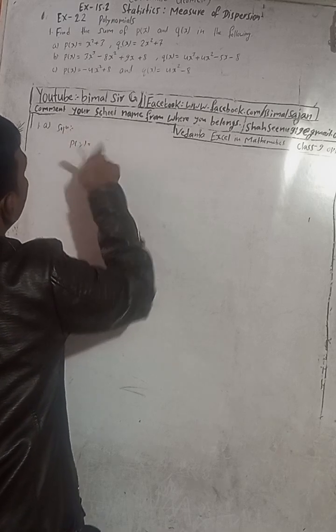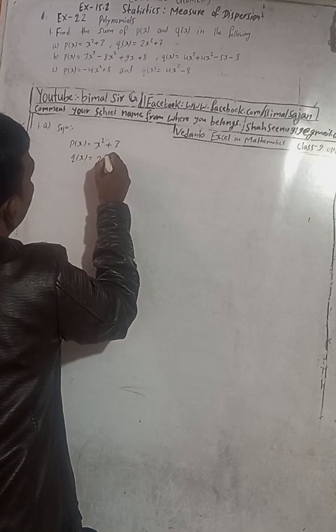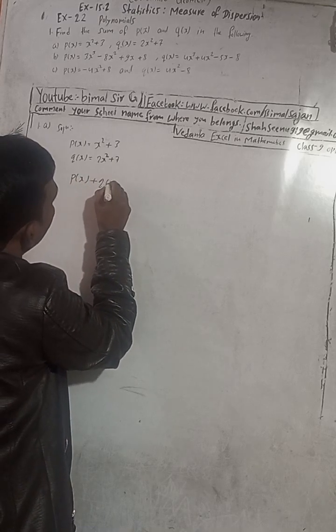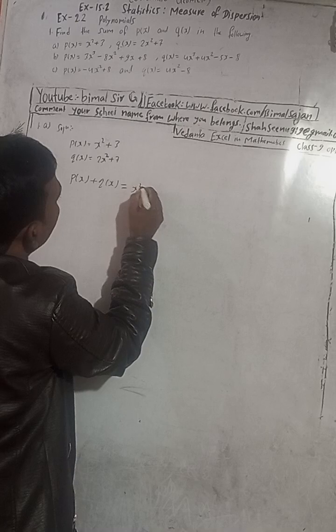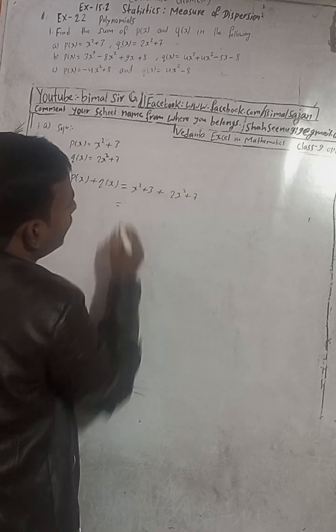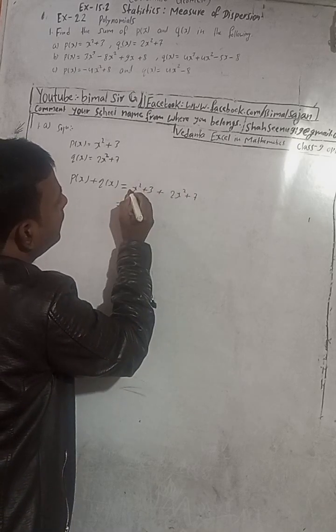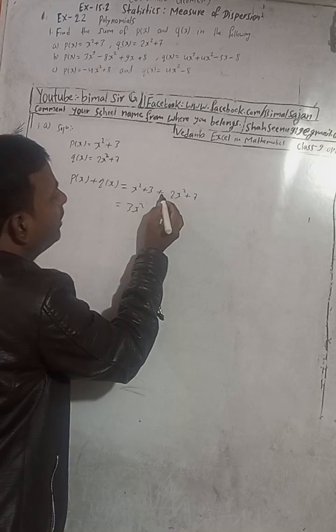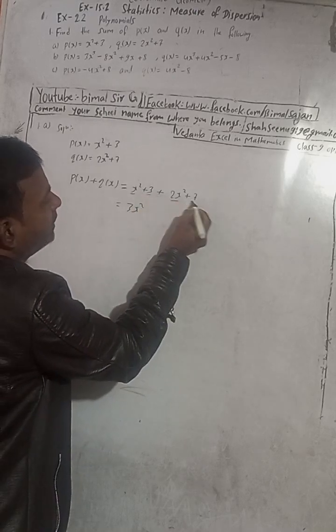px is given as x square plus 3, and qx is given here as 2x square plus 7. Now we have to find the sum, so sum means px plus qx. This is called addition. So here px is x square plus 3, plus qx is 2x square plus 7. We can add the like terms. Like terms means there is x square and x square, so these two when you add, this is 1x square, this is 2x square, so 3x square. Then the constants: 3 plus 7 equals 10.